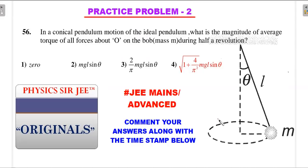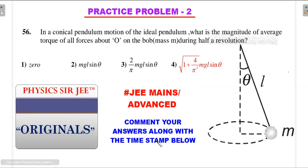Practice problem two tests how well you understand rotating vectors. It's a standard conical pendulum with a single point mass going in a horizontal circle on an ideal thread. Calculate the magnitude of the average torque of all forces about O — the suspension point — during half a revolution. This is at mains level, easier side of JEE Advanced. I'll answer it in Physics Surgery Originals. Don't forget the timestamp in your comment.